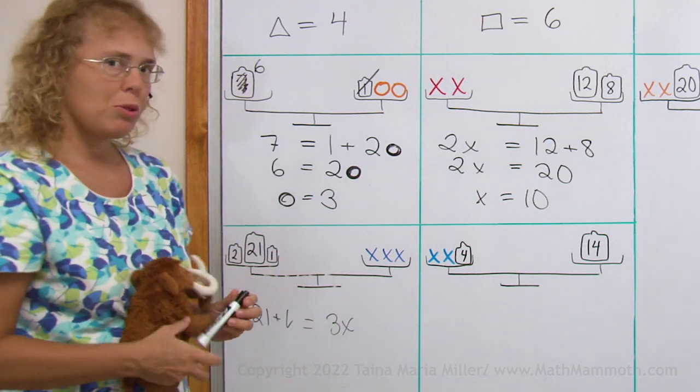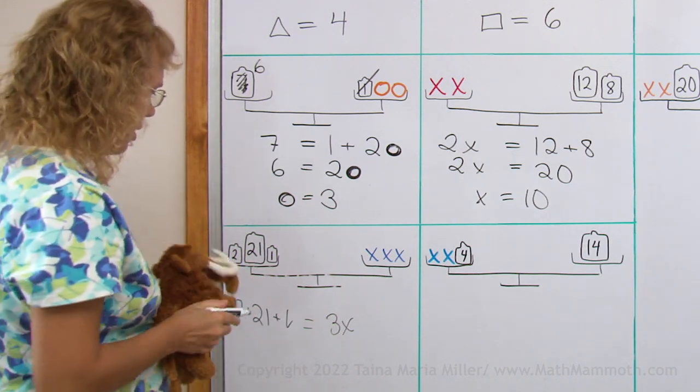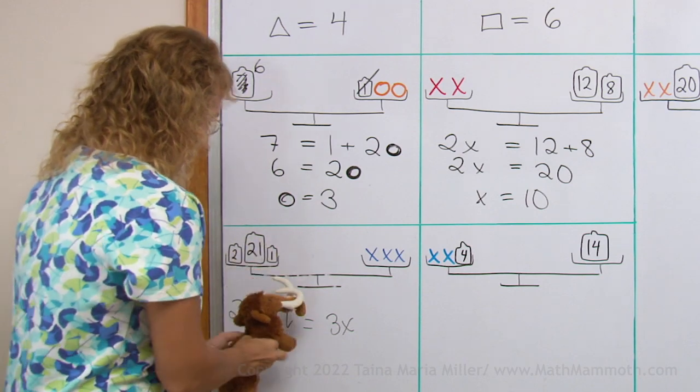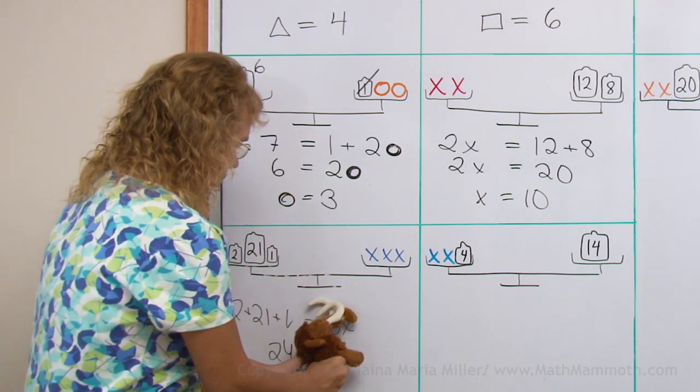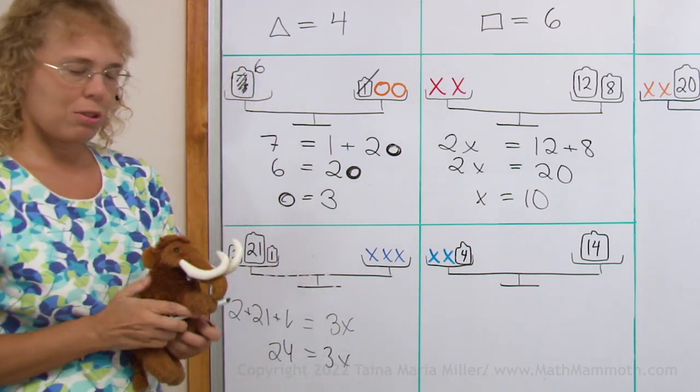So what should we do now? We need to add all those. What do we get there? 24 equals 3x.